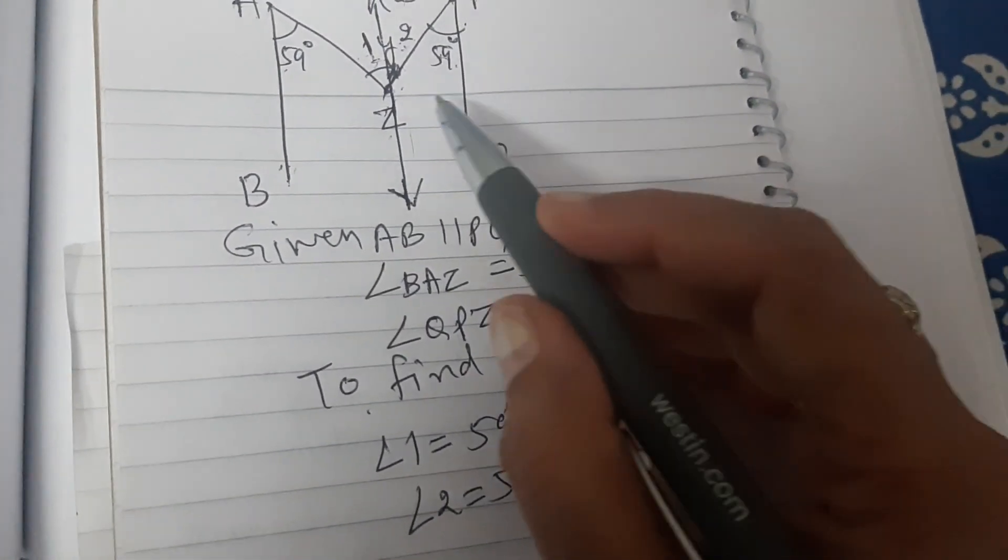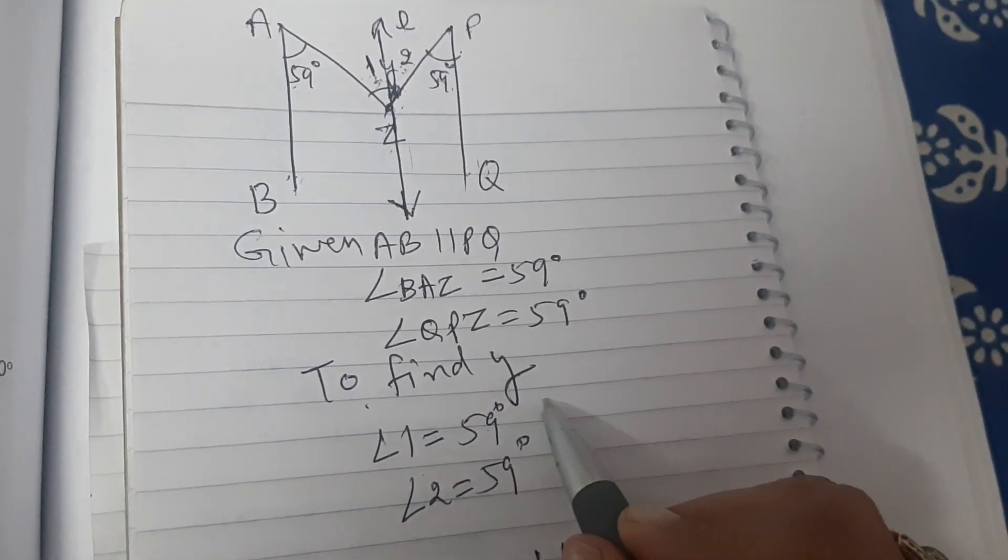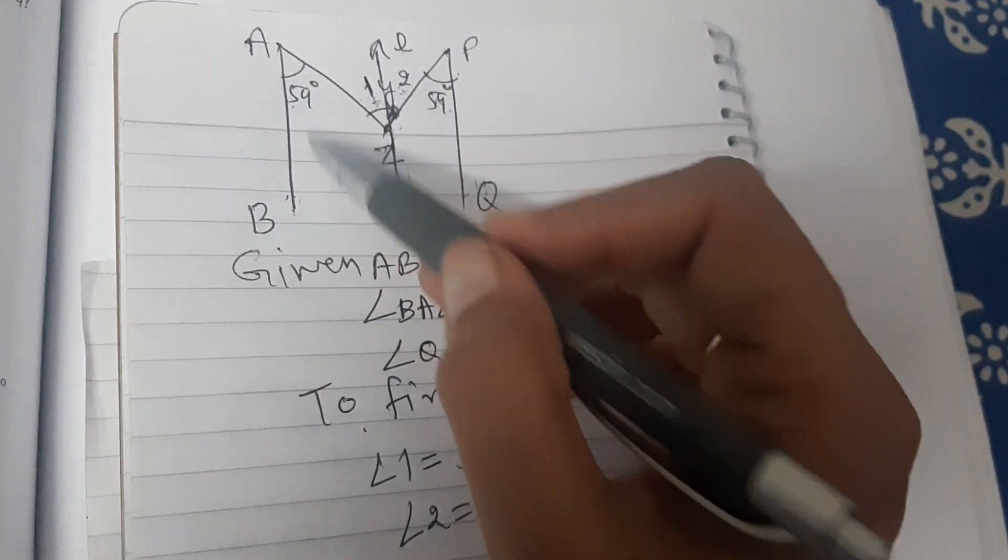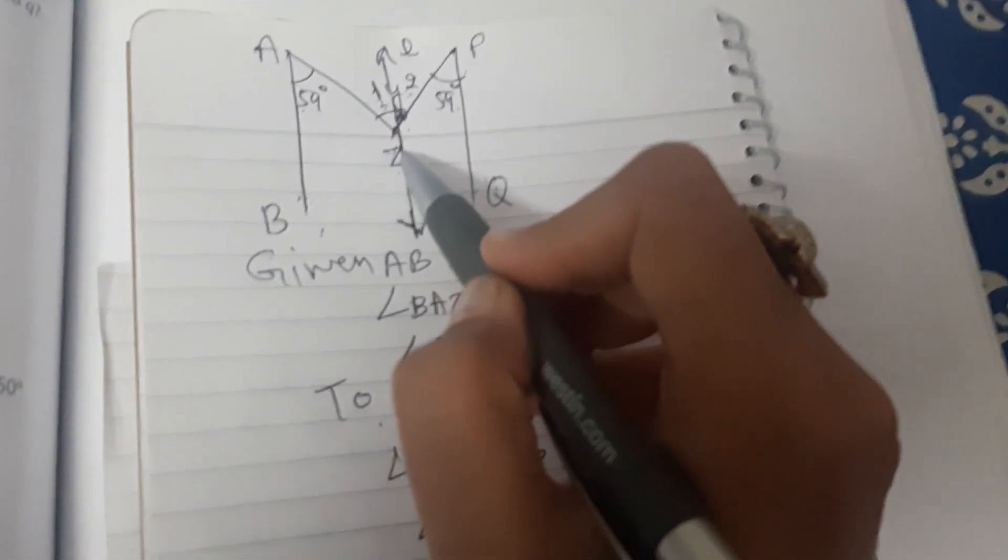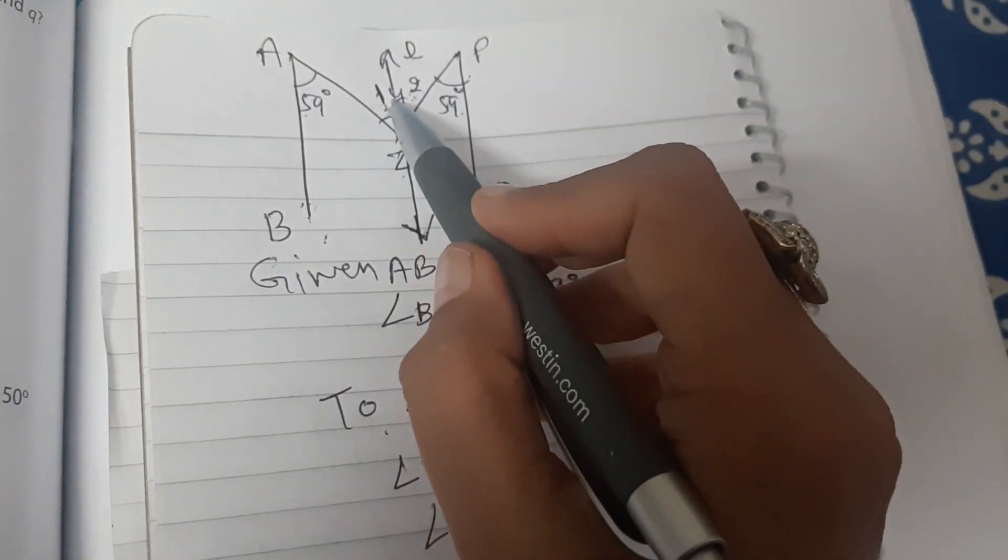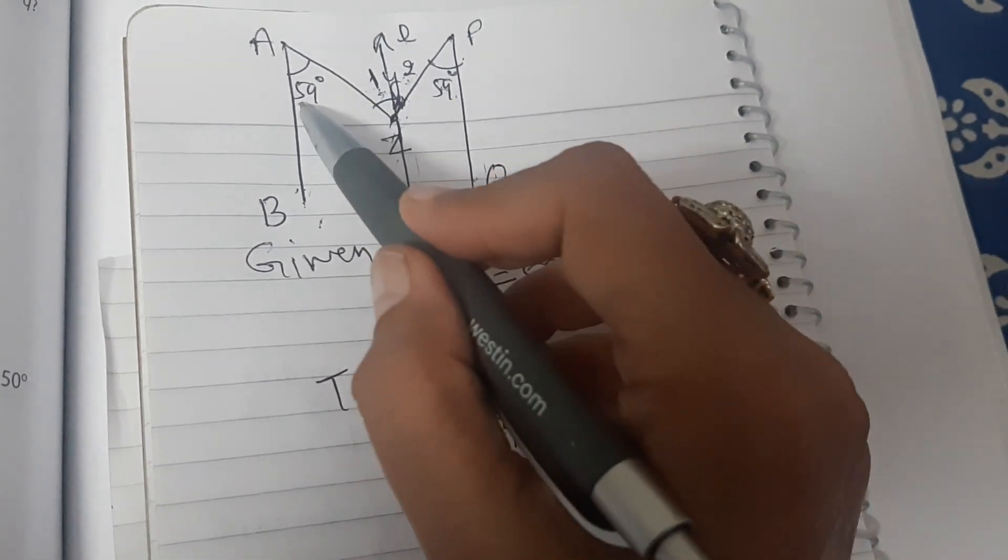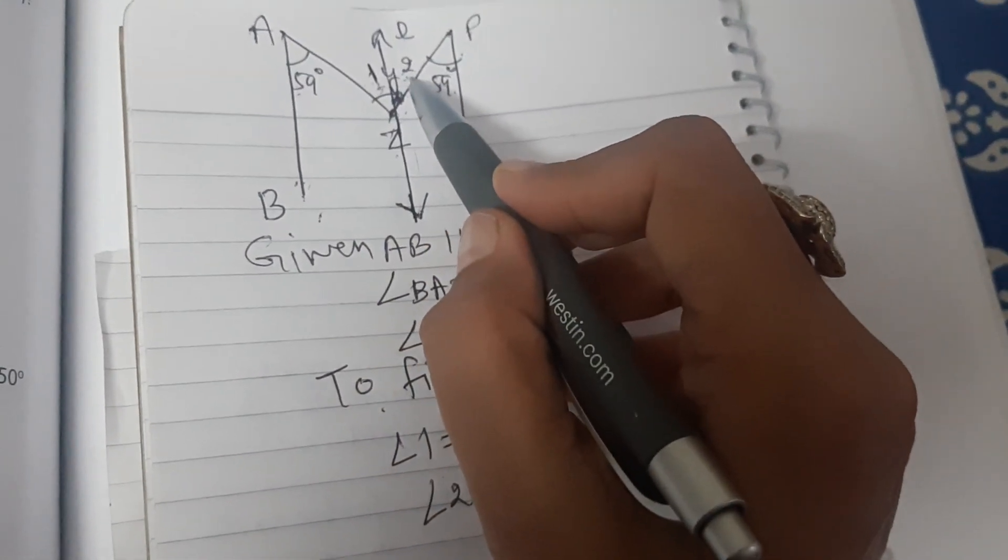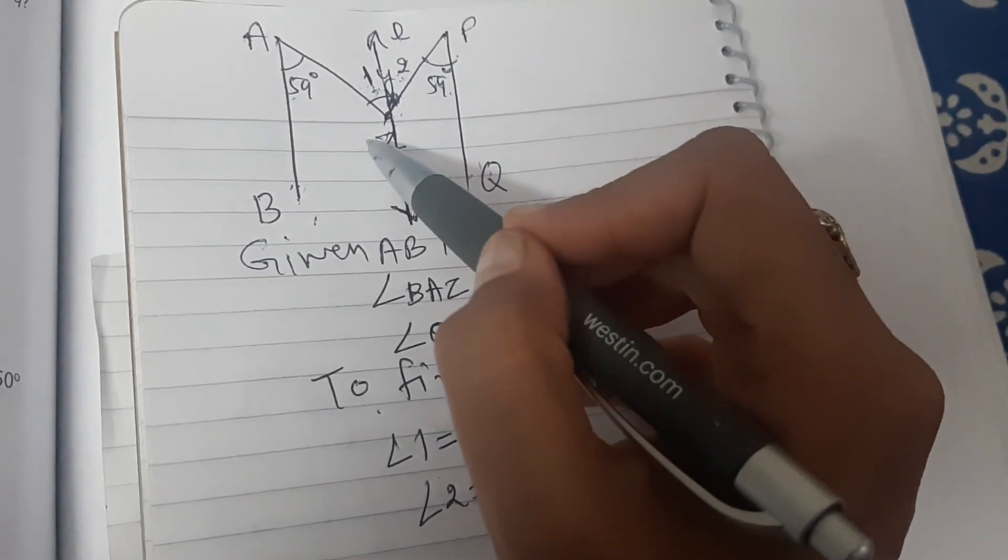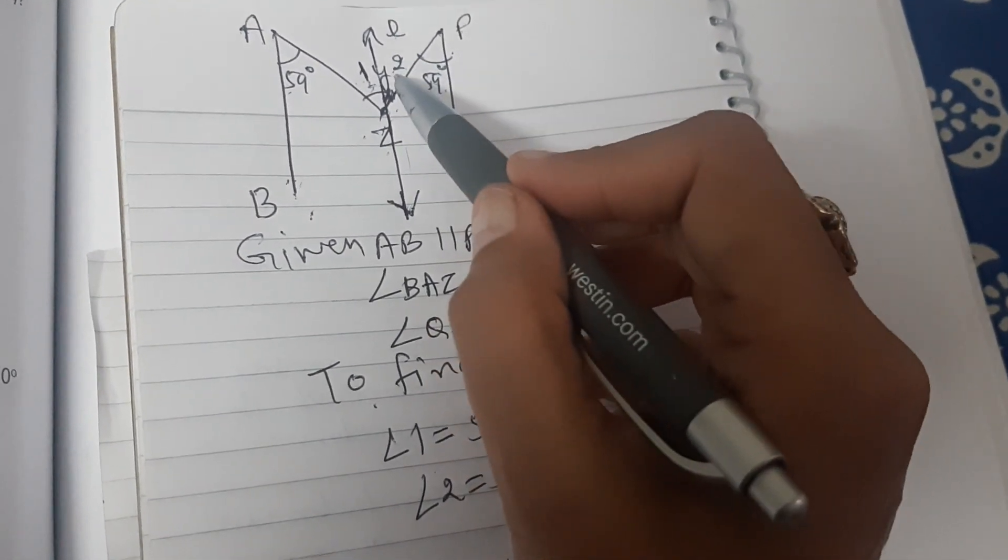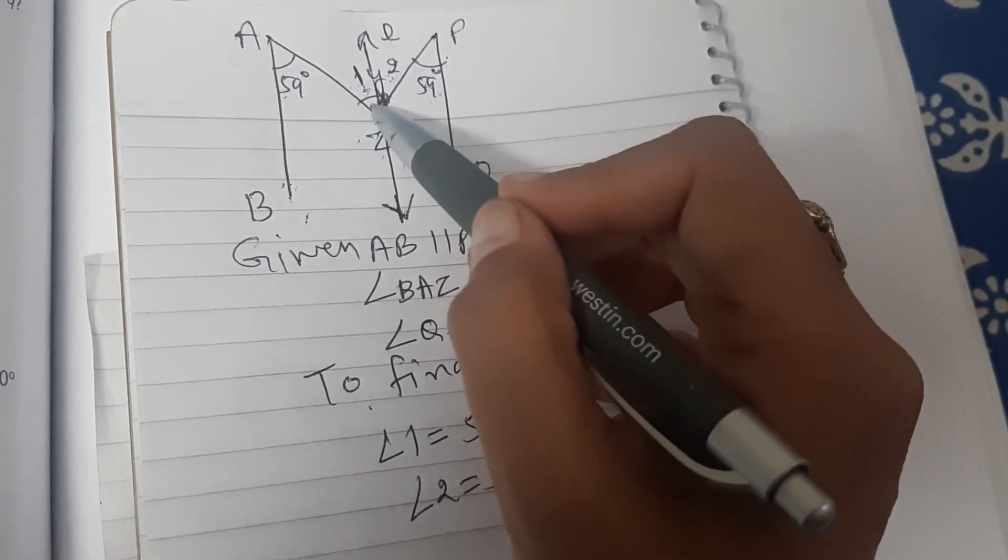Do not forget to write the reason when you are writing why angle 1 is 59 degrees. Write it completely that AB is parallel to line L and AZ is transversal. Angle 1 will be 59 degrees, alternate interior angles. Similarly for angle 2, write PQ is parallel to line L and PZ is transversal. So angle 2 will be 59 degrees. Add angle 1 and 2, you will get the value of Y.